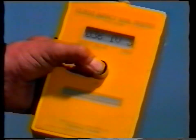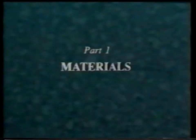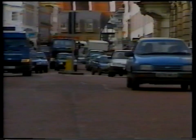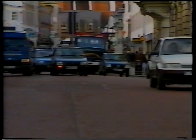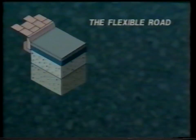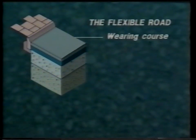Before Clegg readings can be interpreted properly, it is essential that the operator has a basic understanding of the structure of the highway. All roads are made up of a number of layers constructed from different materials. The flexible road is the type you're most likely to come across. In its undisturbed state the flexible road consists of four layers, with the wearing course as the top layer which stands up to wear and tear from both traffic and weather.